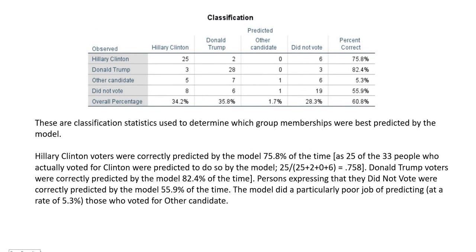Finally, we have our classification statistics, which evaluate how well the model predicts group membership. Hillary Clinton voters were correctly predicted at a rate of 75.8 percent, Donald Trump voters at 82.4 percent, and those who did not vote at about 55.9 percent. The model does a particularly poor job predicting those who voted for the other candidate, at only 5.3 percent — which is not surprising since it's a catch-all category for all other individuals in the presidential race.